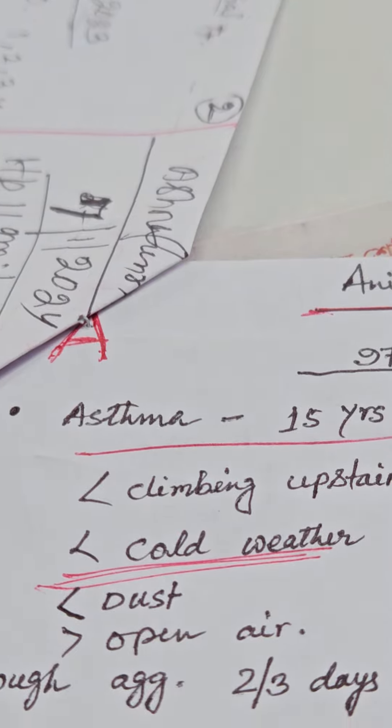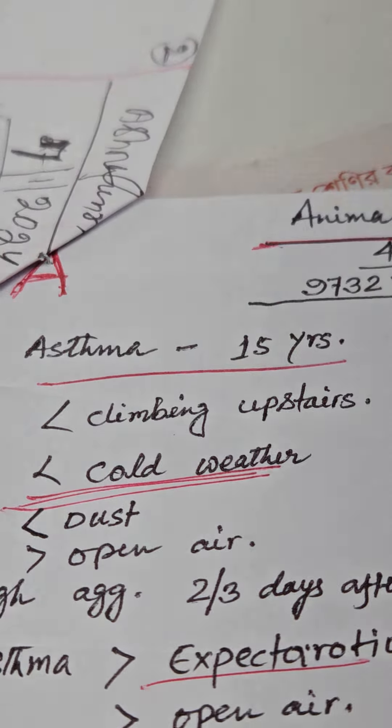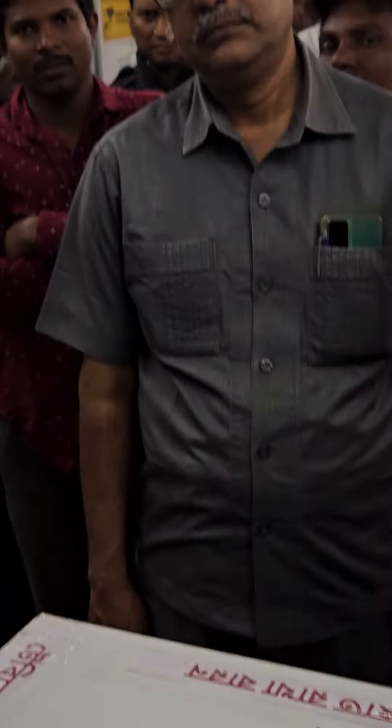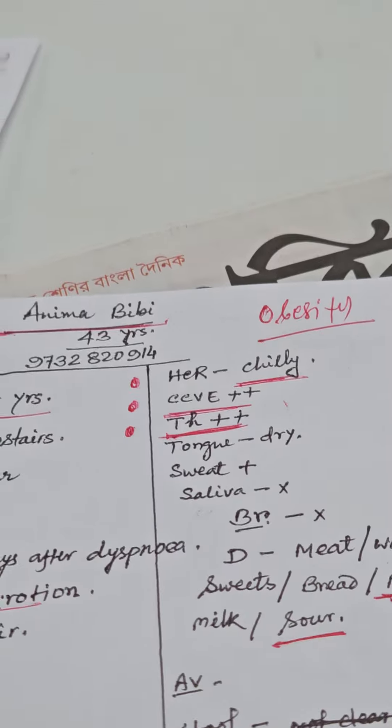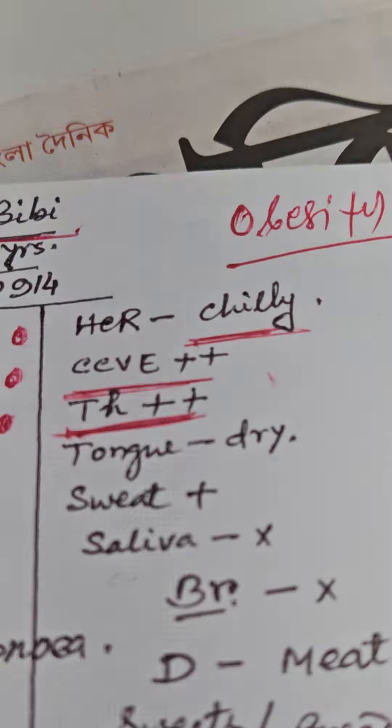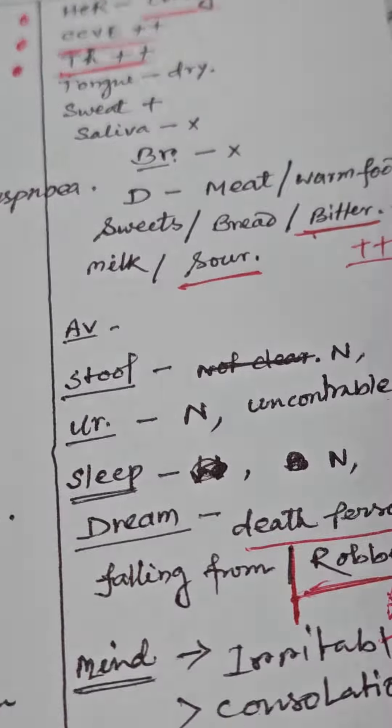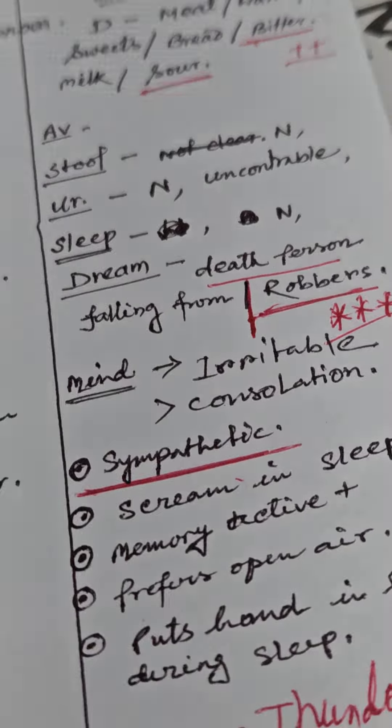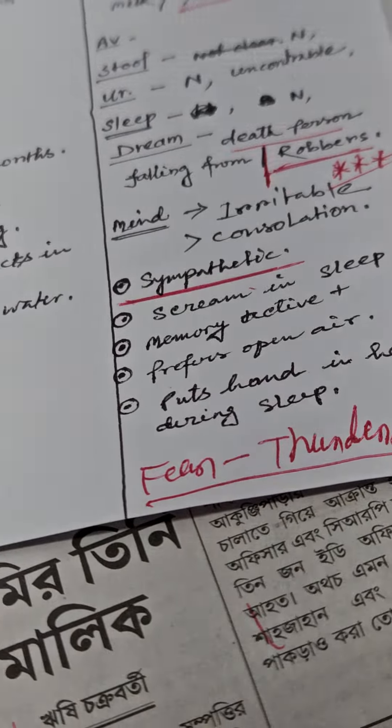So Natrum Muriaticum is the choice of medicine. Though the patient has been suffering from asthma for the last 15 years, my medicine is selected on the basis of dreams of rovers, desire for beater, chili patient, gets cold very easily, thirst plus plus, sympathetic, fear of thunderstorms.